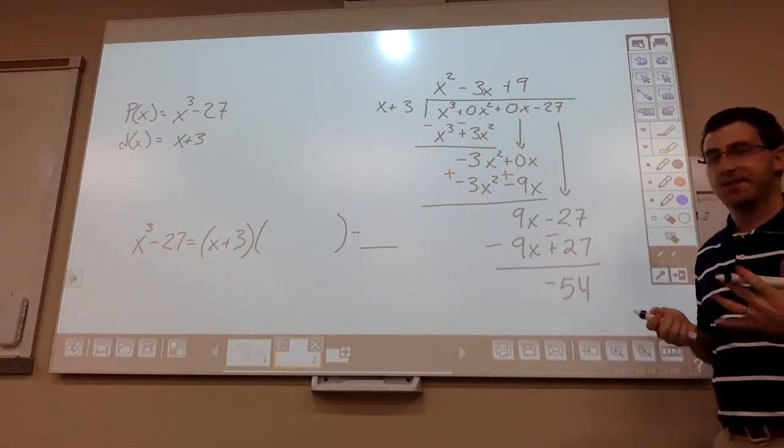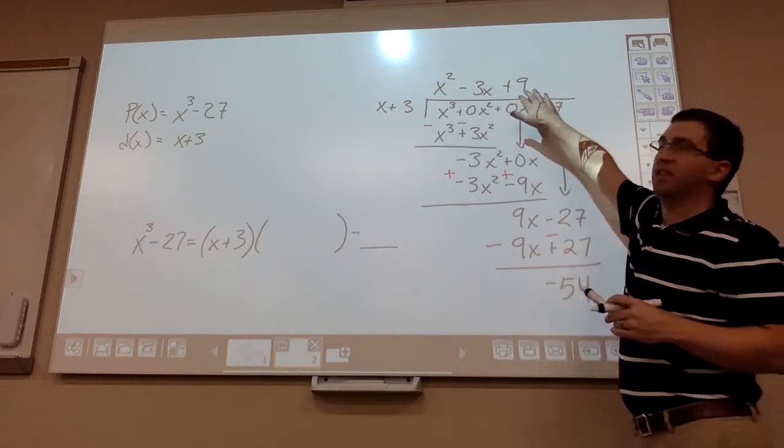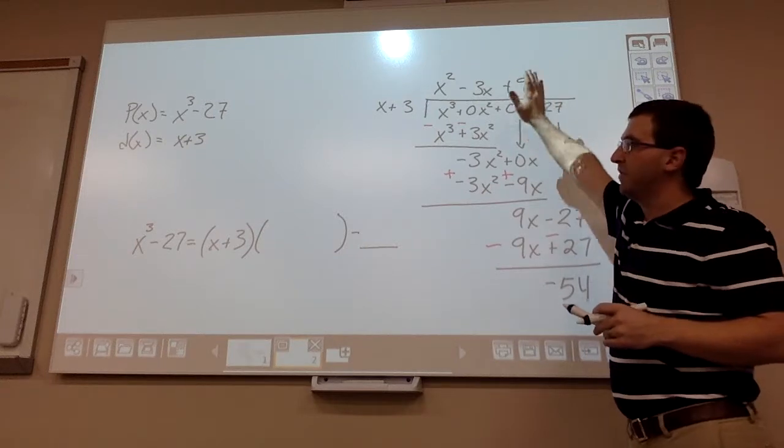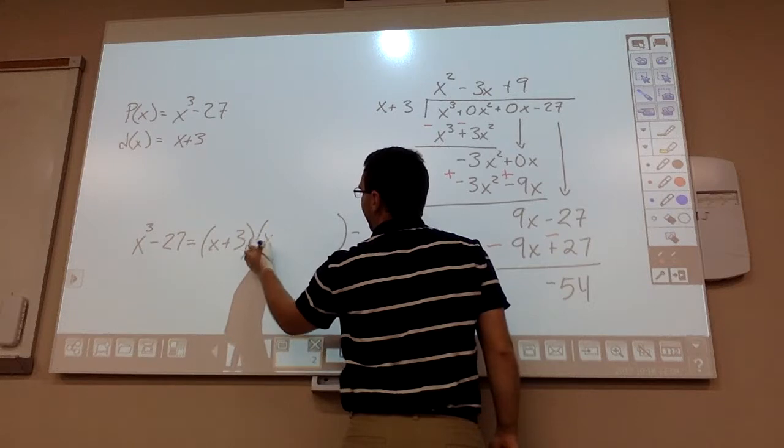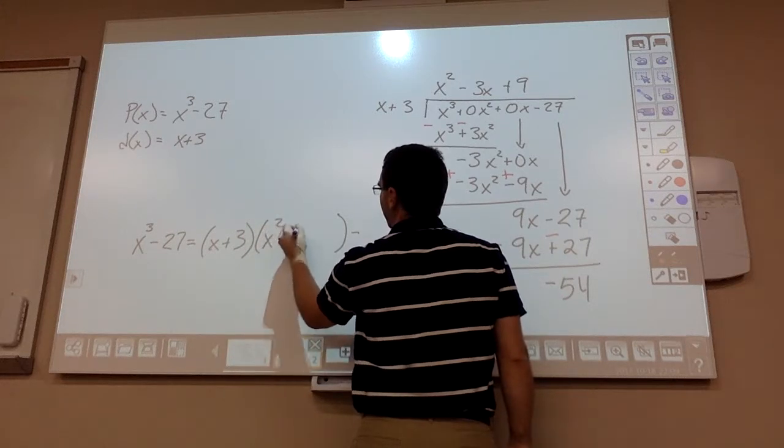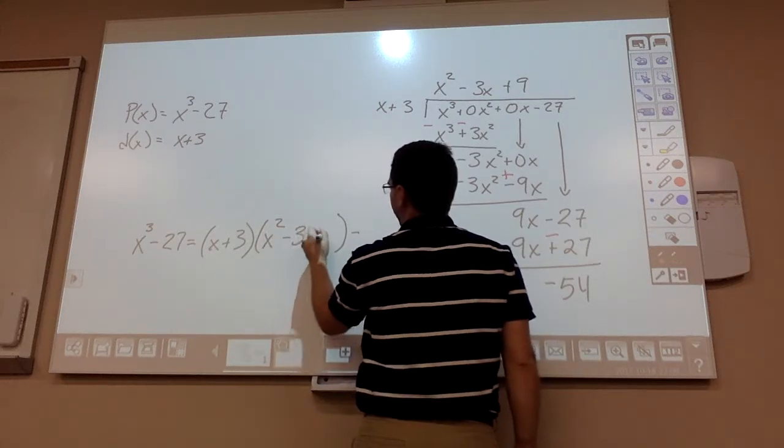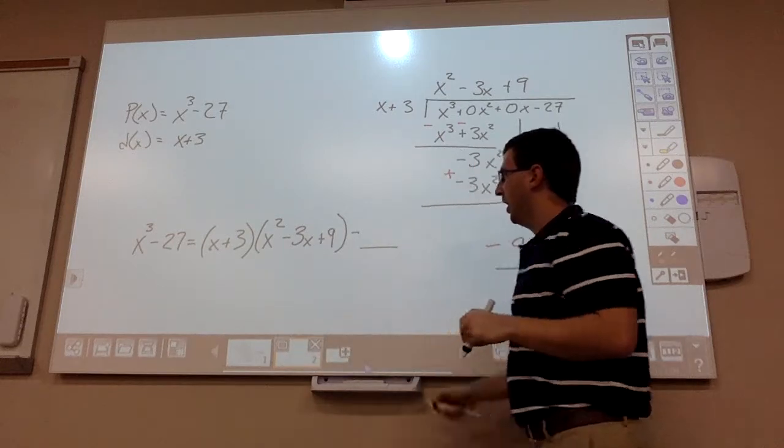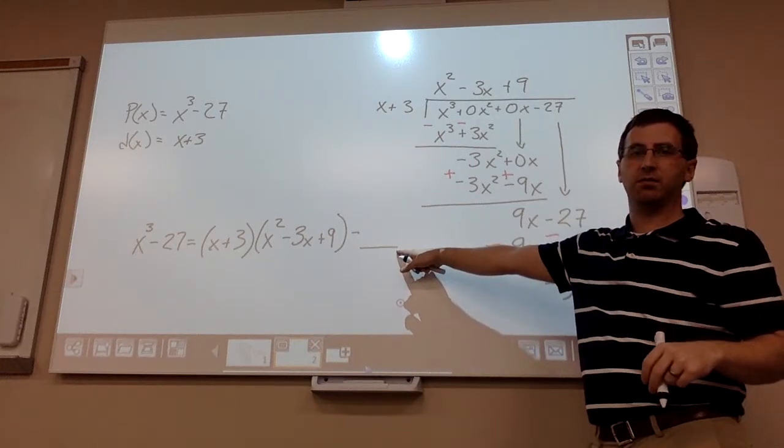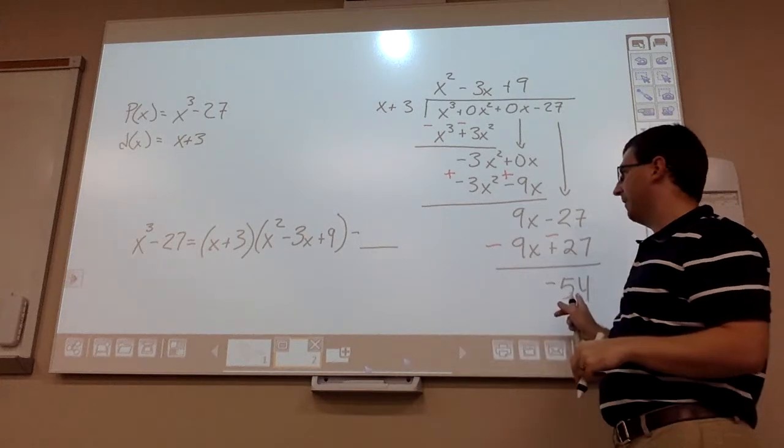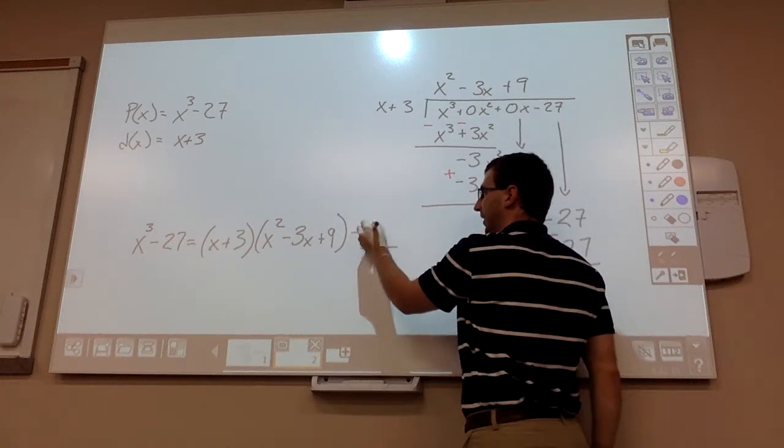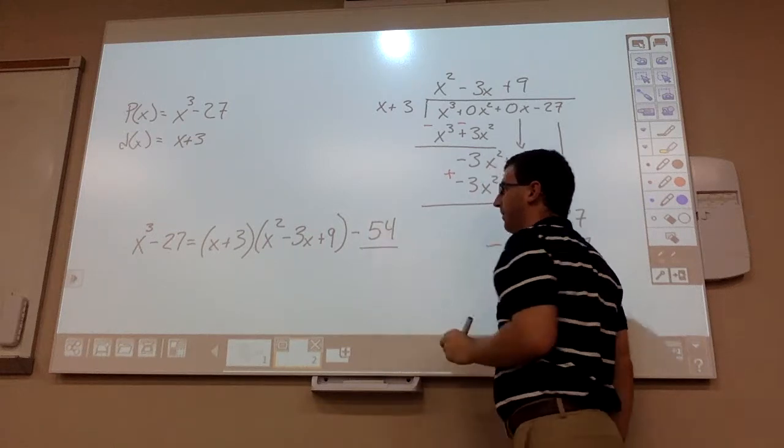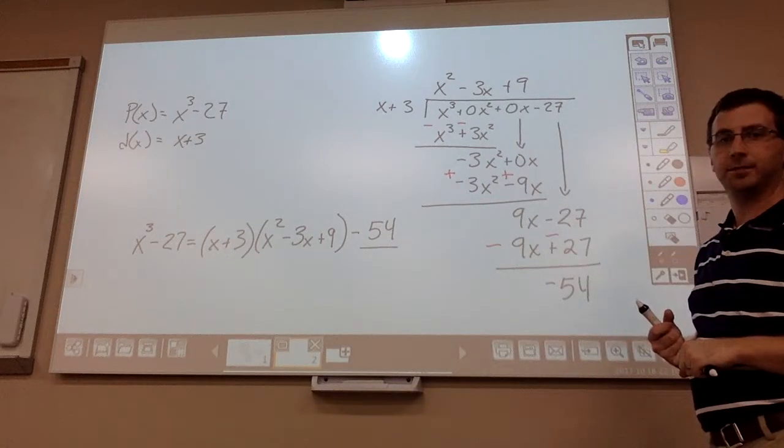So now to fill in the missing pieces, the quotient, the stuff that's on the top of the long division, well that will go inside the parentheses right here. So that would be x² - 3x + 9. And the remainder is what goes in this little blank spot right here. So we have -54, because we already have a minus sign right there.